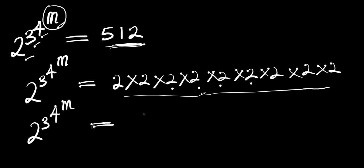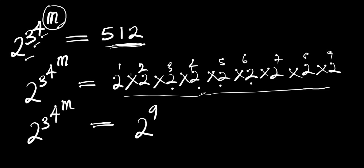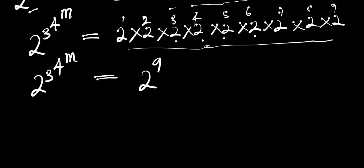This is 2 to the power of 9, because if you count, there are nine 2s: 2 times 2 is 4, times 2 is 8, times 2 is 16, times 2 is 32, times 2 is 64, times 2 is 128, times 2 is 256, times 2 is 512. So that is 2^9.